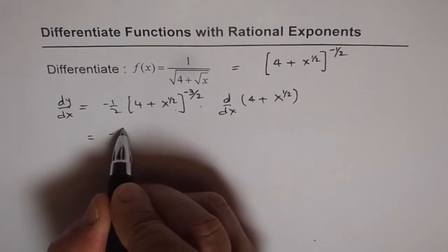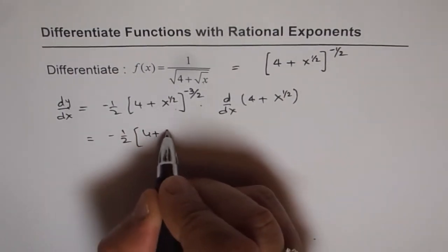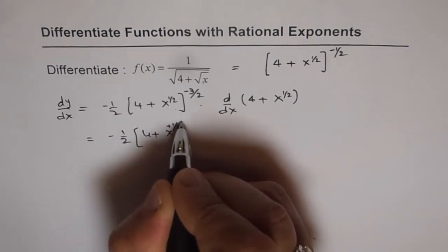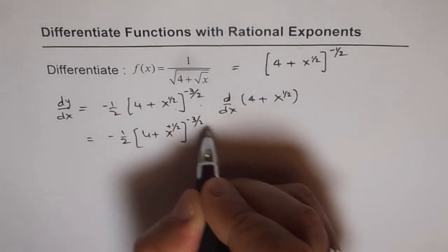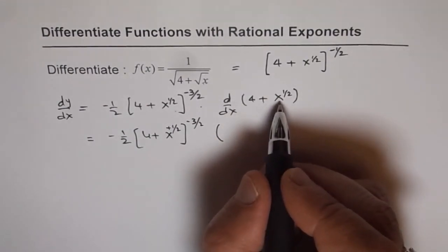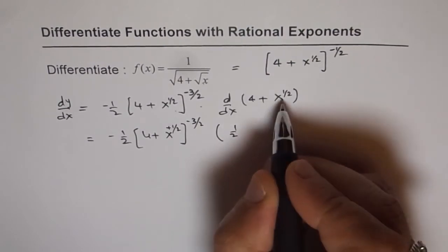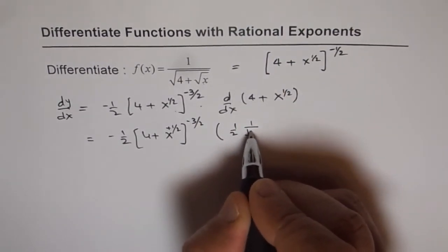Now let's do this derivative this time. 4 plus x to the power of half to the power of minus 3 over 2. And derivative of this function is, derivative of 4 is 0. And for half, it is half x to the power of minus half or 1 over square root x.